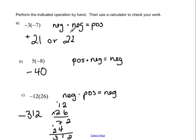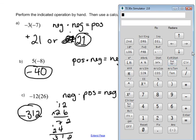Okay, so I've got my three answers. We've got 21, negative 40, and negative 312. Let's pull up the calculator and make sure that our answers came out right.